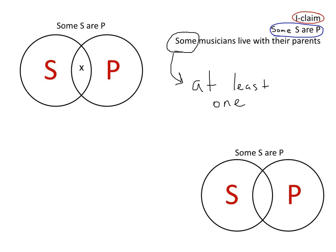So what we're saying here is at least one member of the S category is a member of the P category. And so the region that we're talking about is this overlapping region here.